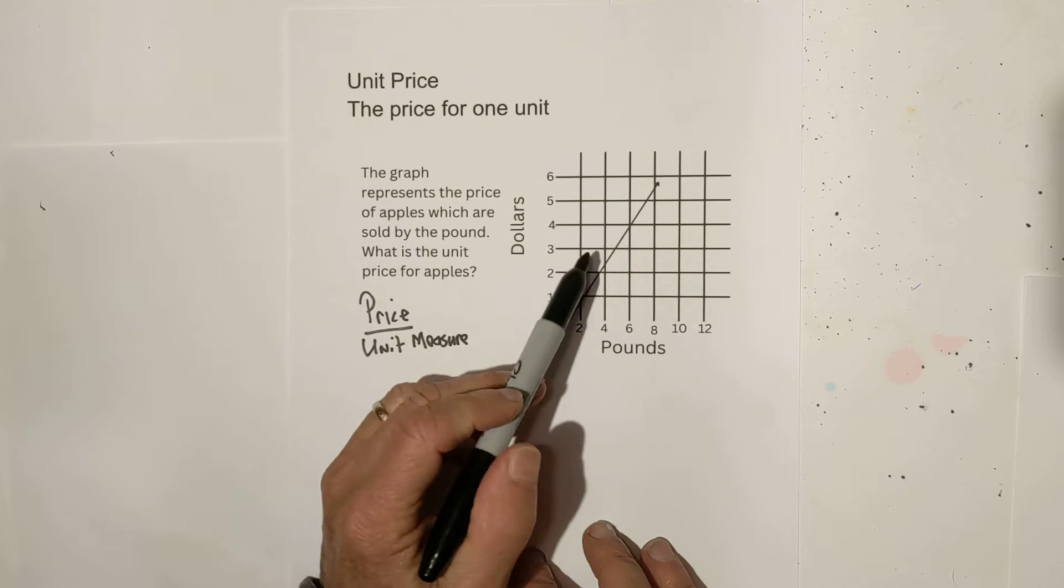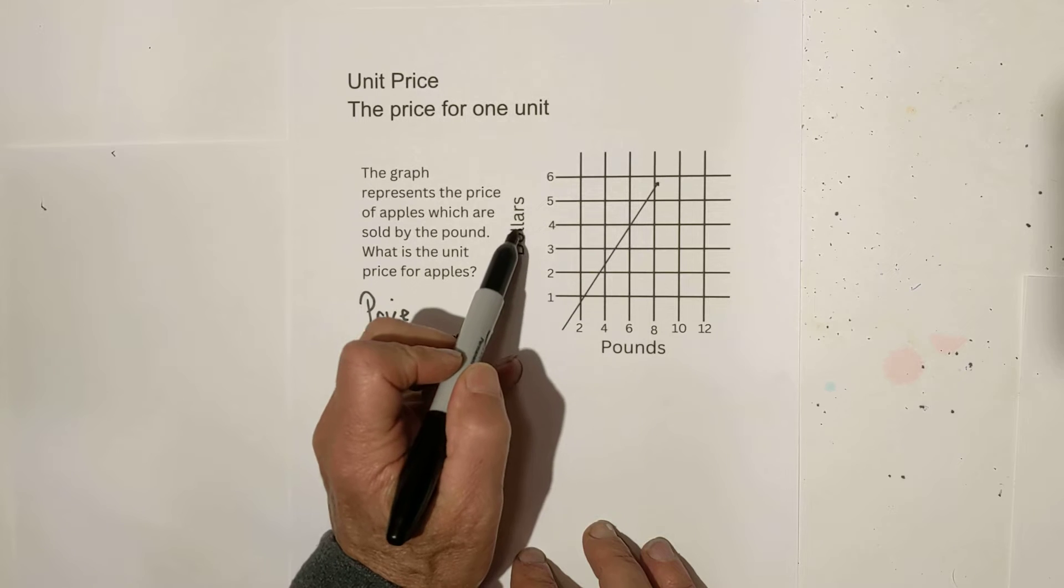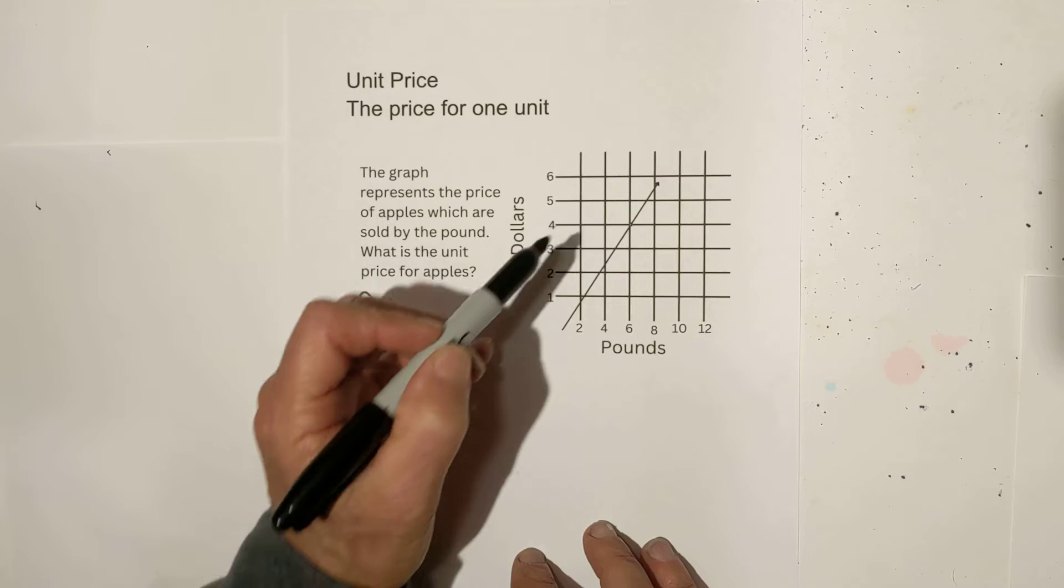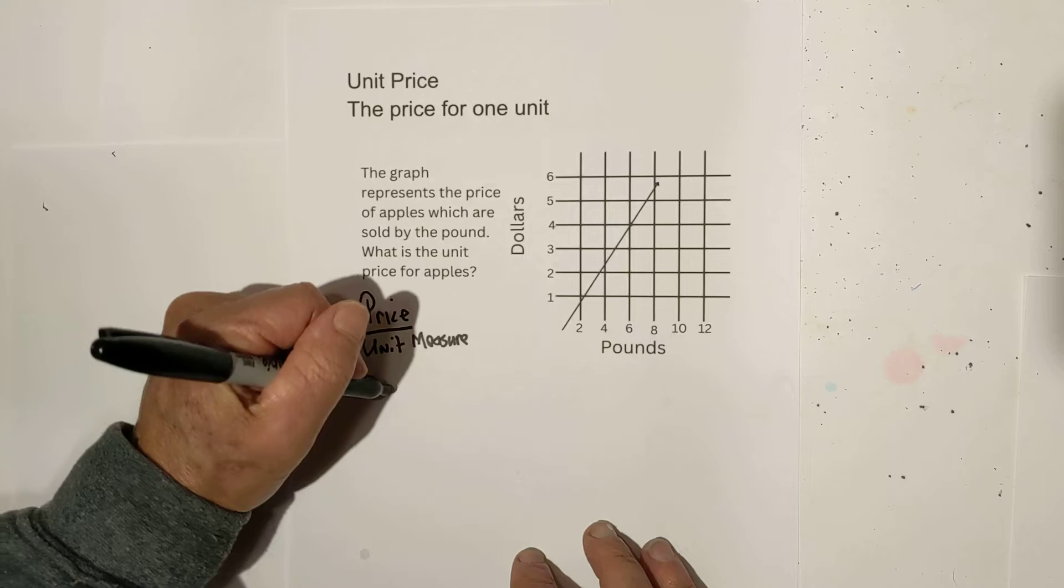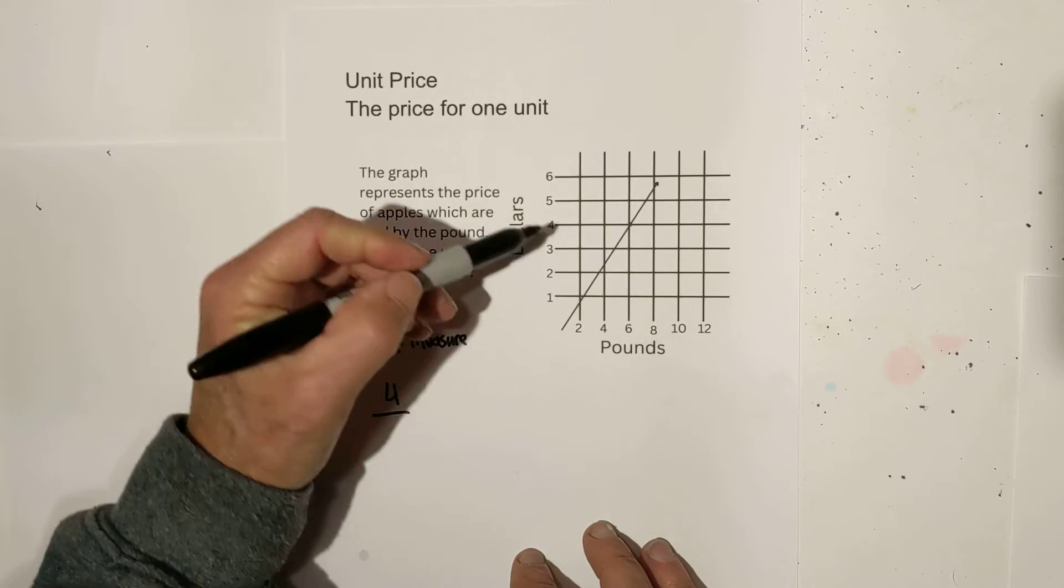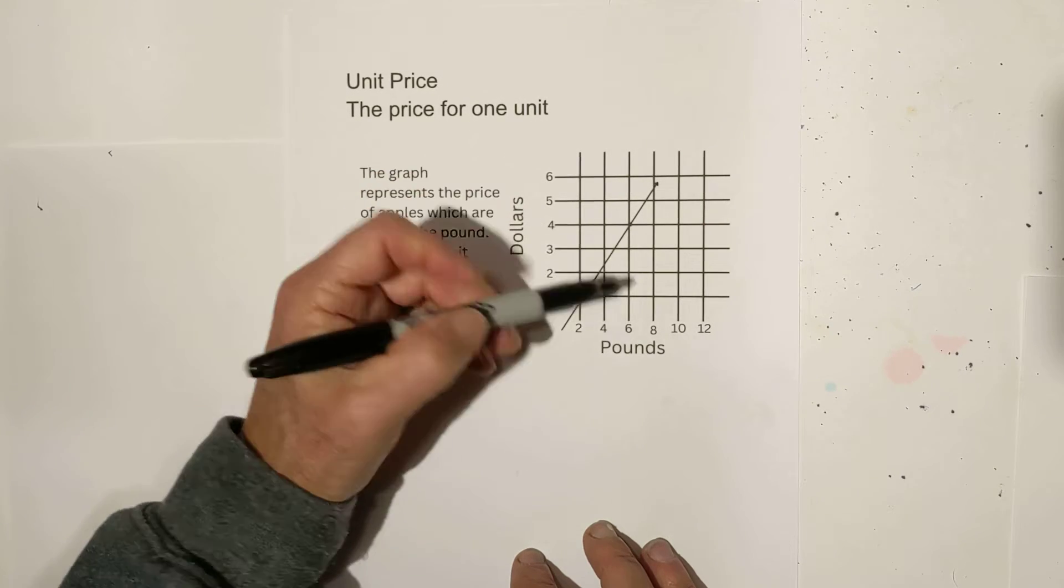What you're looking for with the graph is the point that intersects both the x and the y, or the dollars and the pounds. And if you look carefully, it intersects exactly right here. So let's fill it in. For price, we have four. And for the unit of measure, which is pounds, it looks like we have six.